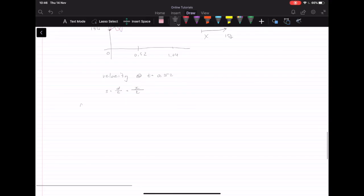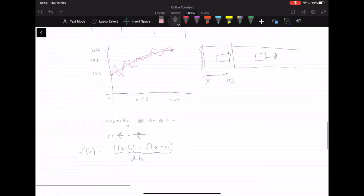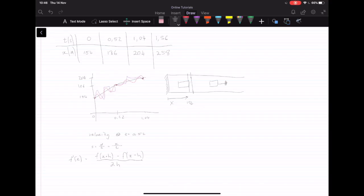So the central difference, we have f dash of x is equal to f of x plus h minus f of x minus h over 2h. So now the real question is, what are these values? So we know that x is our time in this case. So we know that the time we're looking for, so we let x equal time at 0.52. And now we need to figure out our h.